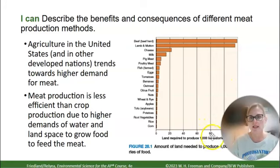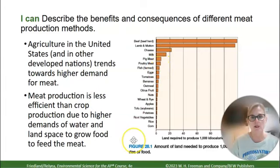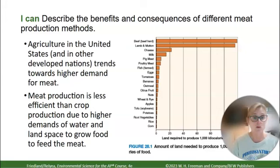You can see the land required to produce meat. Beef uses the most land, then lamb and mutton, cheese, milk, pig, poultry, fish, farmed fish, and so on down the list. Meat production is less efficient than crop production due to the higher amounts of water and land needed to grow food to feed the animals.